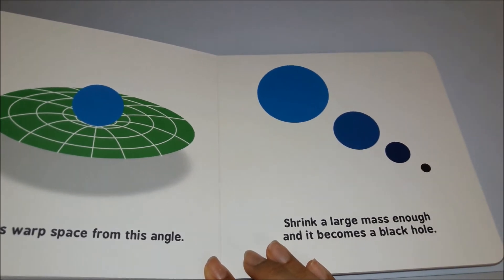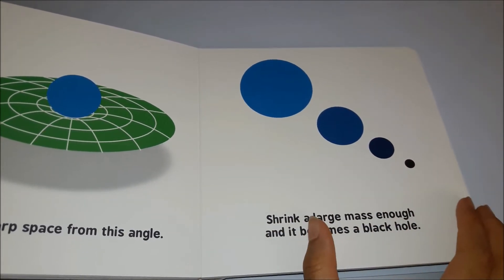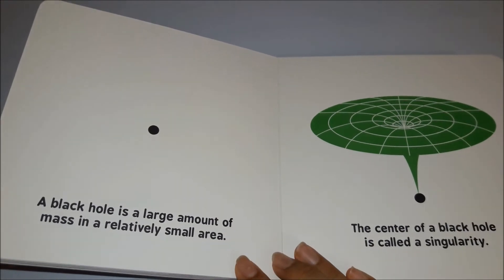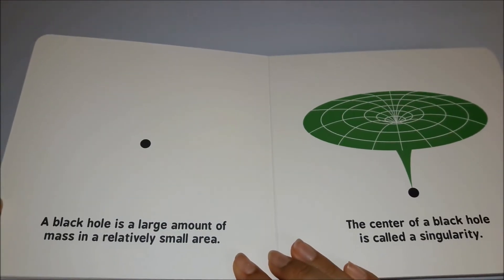Shrink a large mass enough and it becomes a black hole. A black hole is a large amount of mass in a relatively small area.